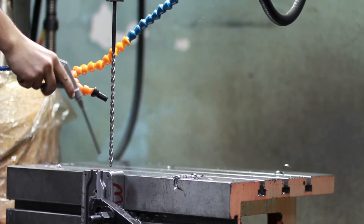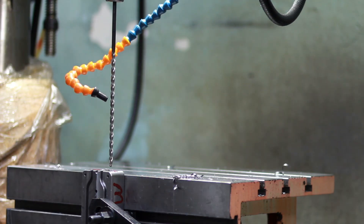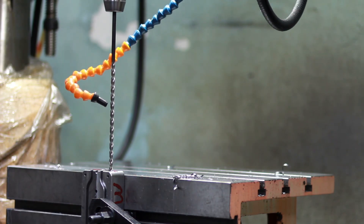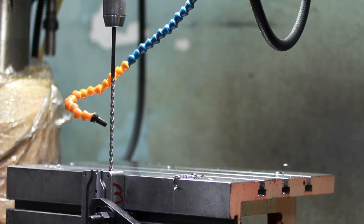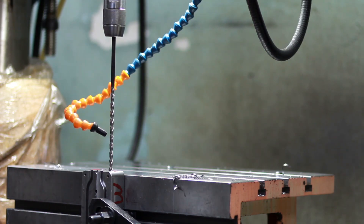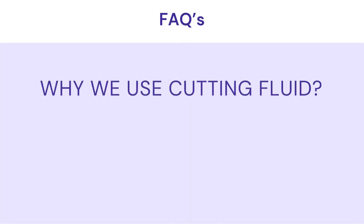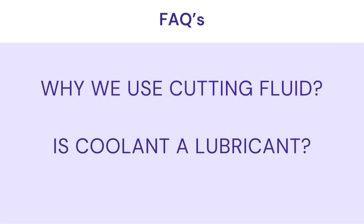Let's wind up by discussing some common questions about cutting fluids. Why do we use cutting fluid? We use cutting fluids to minimize the heat generation rate and also for lubrication purposes. Have you wondered whether coolant is a lubricant or not? Well the answer is yes — a coolant can be used as a lubricant for metal cutting purposes.